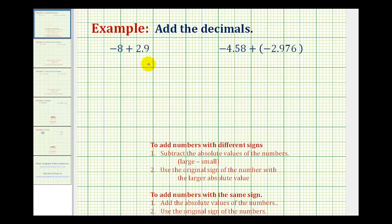We want to add the following signed decimals. Looking at our first example, we have negative eight plus positive 2.9.